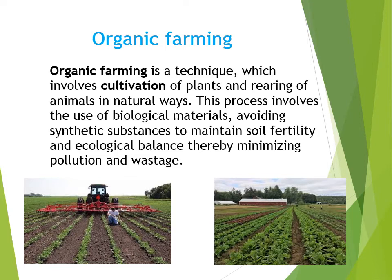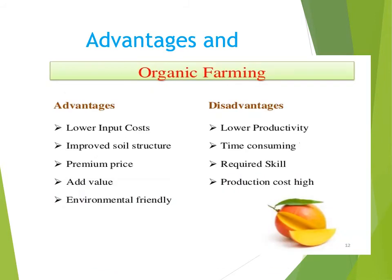This process involves the use of biological materials, avoiding synthetic substances to maintain soil fertility and ecological balance, thereby minimizing pollution and wastage. Organic farming is helping us to save our environment as well as enhancing agricultural products. The advantages of organic farming are: lower input cost, improved soil structure, premium price, it adds value, and it is environment friendly. The disadvantages of organic farming are: lower productivity, it is very time consuming, it requires a lot of skills, and its production cost is very high.